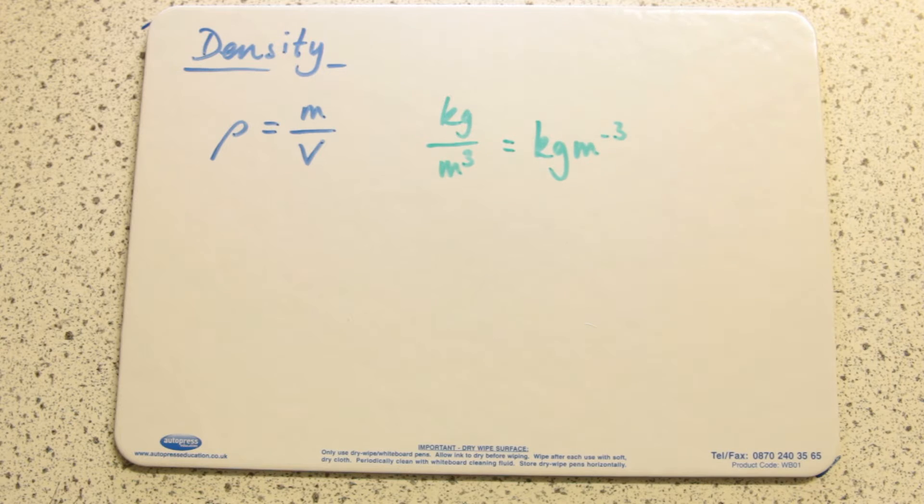Density is very easy to calculate if you've got a nice regular cuboid shape. Length times width times height is the volume, you can weigh the mass in kilograms, very easy to do.